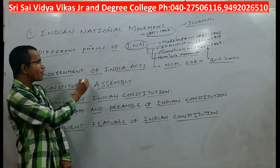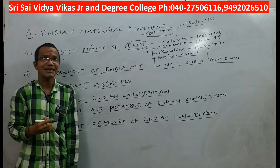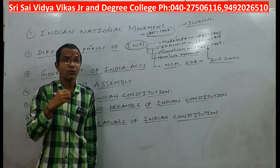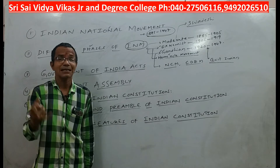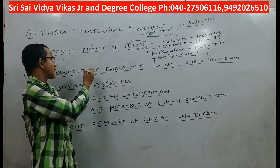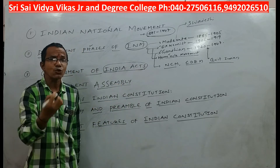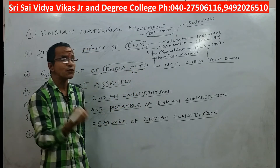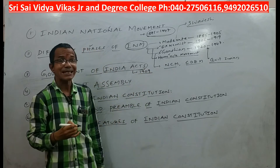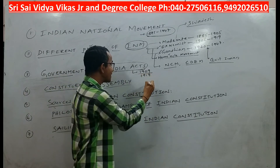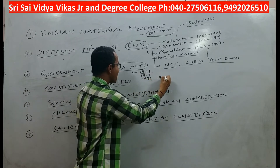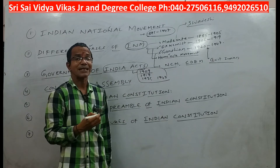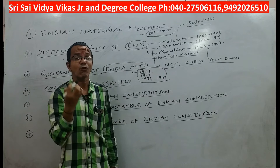After this topic, we discussed the Government of India Acts. As Britishers were ruling our country, they provided a few acts to rule India. There were many acts, but historians give importance to a few: the Councils Act of 1909, 1919, 1935, and 1947. The 1909 Act came because of the moderate reform revolution.